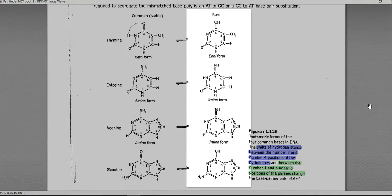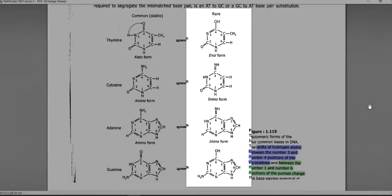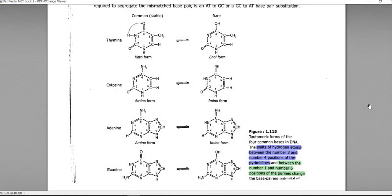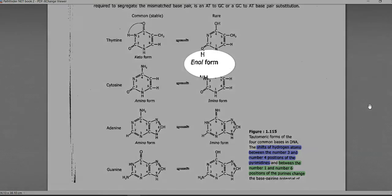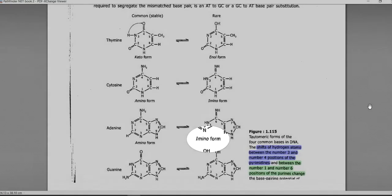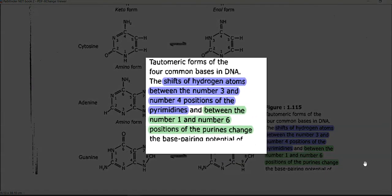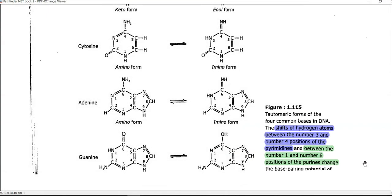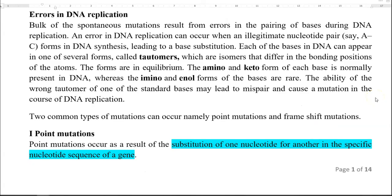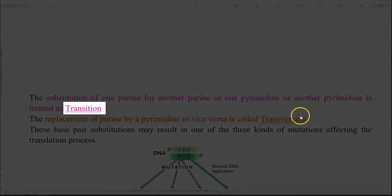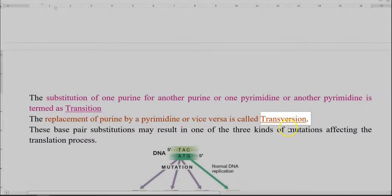What is shown on the right-hand side refers to rare forms that result in mutations. They constitute the enol form as well as imino forms of the bases. This is affected mainly due to the shift in hydrogen atoms between positions 3 and 4 if it is a pyrimidine, and between positions 1 and 6 if it is a purine base. Due to errors in DNA replication, mutations commonly result in the right-hand side forms.